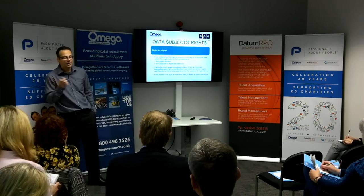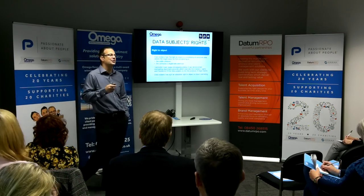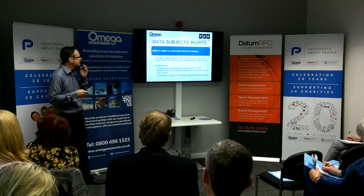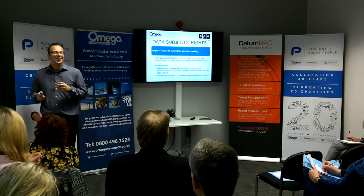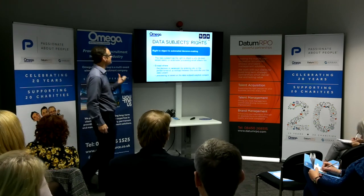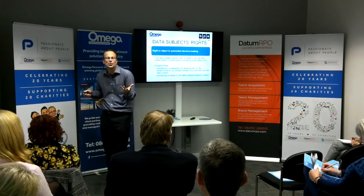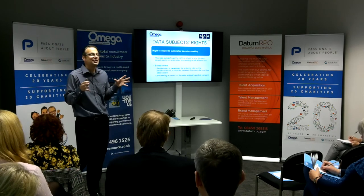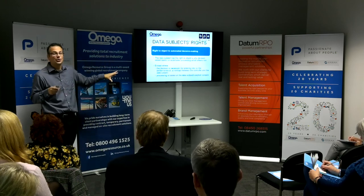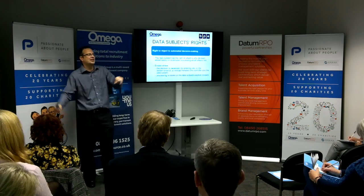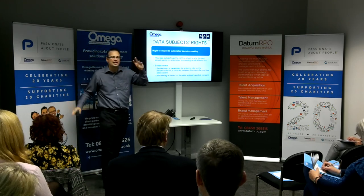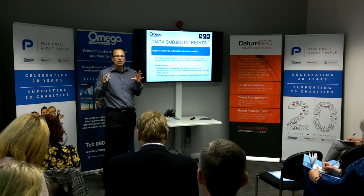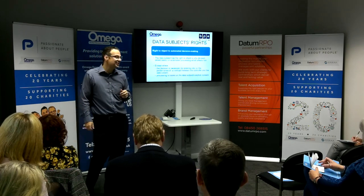Finally, I mentioned earlier the rights around automated decision-making. The reason you have to tell individuals at the outset that you use automated decisions is because they have the right to object to them. They have the right to say: I don't want a computer making a decision about me, I want a human to intervene. Their credit score might be low for a good reason, and they want that taken into account. Individuals have a right to ensure that computers aren't making decisions about them without human oversight.